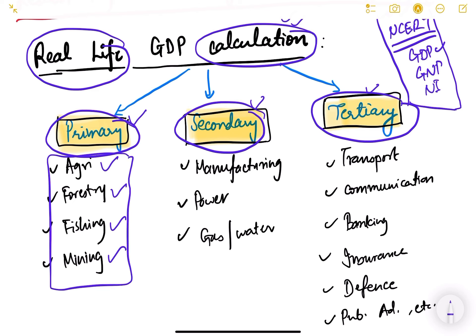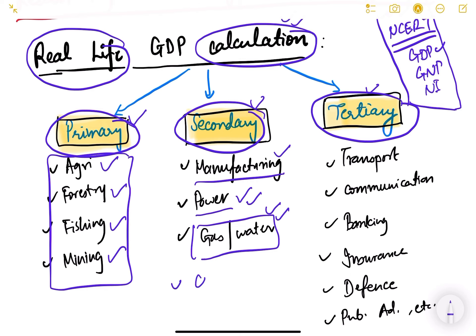The secondary sector consists of manufacturing — basically factories, industries, power (meaning electricity generation and distribution), gas and water. Construction, real estate, and all that is also considered in the secondary sector.